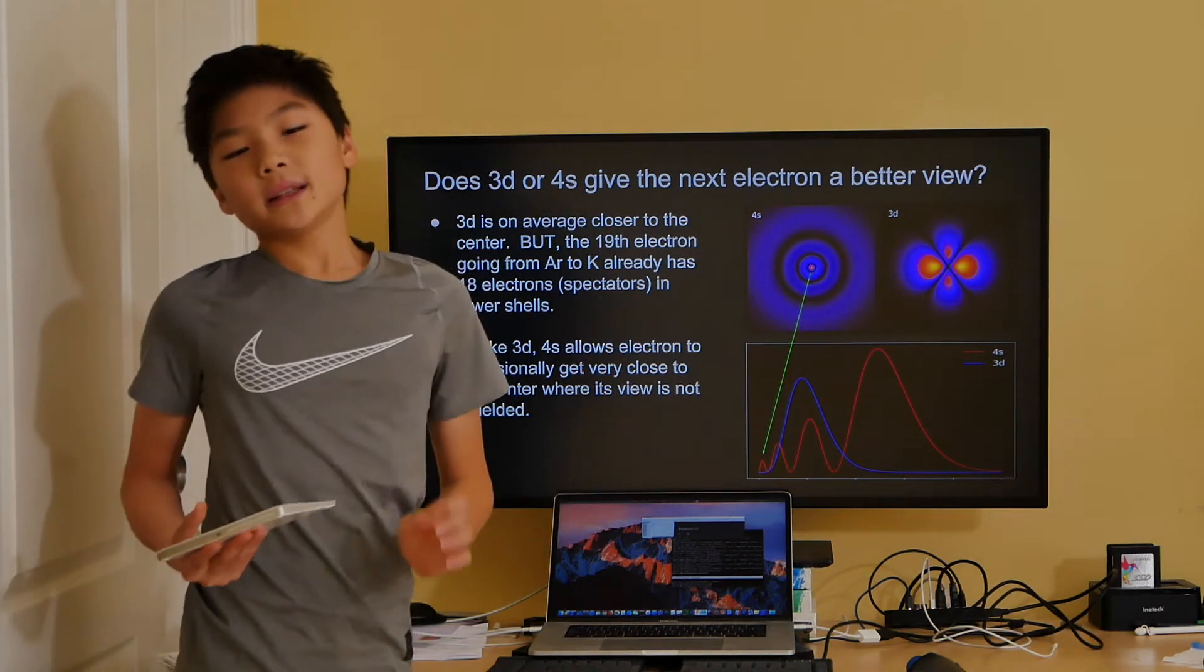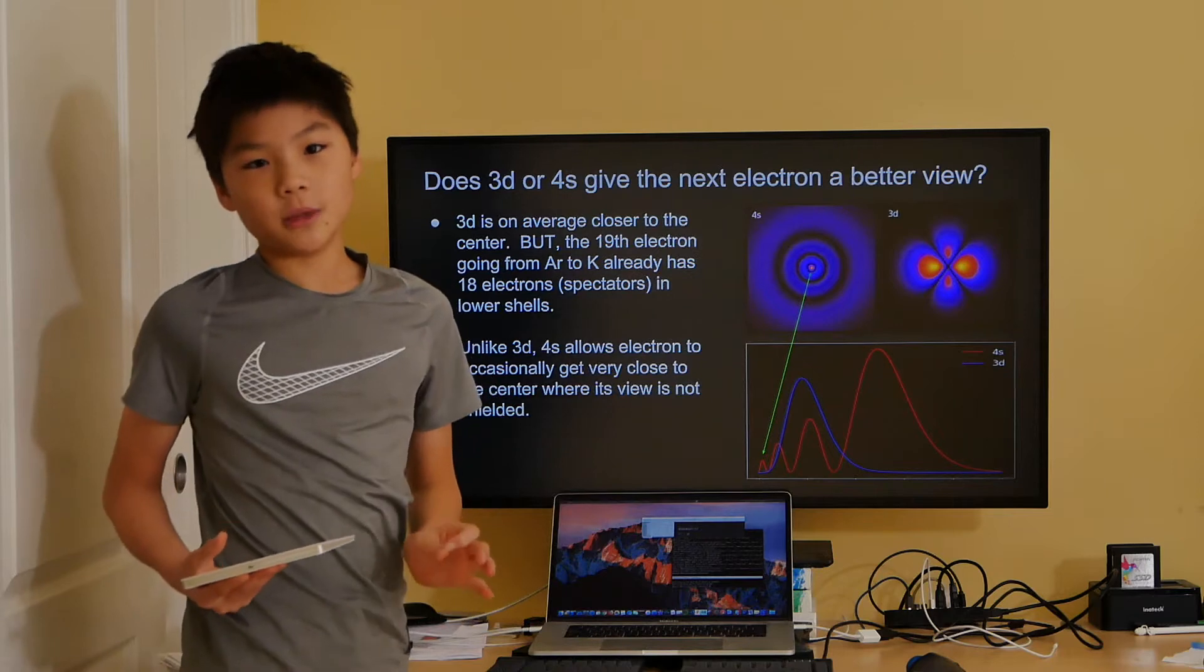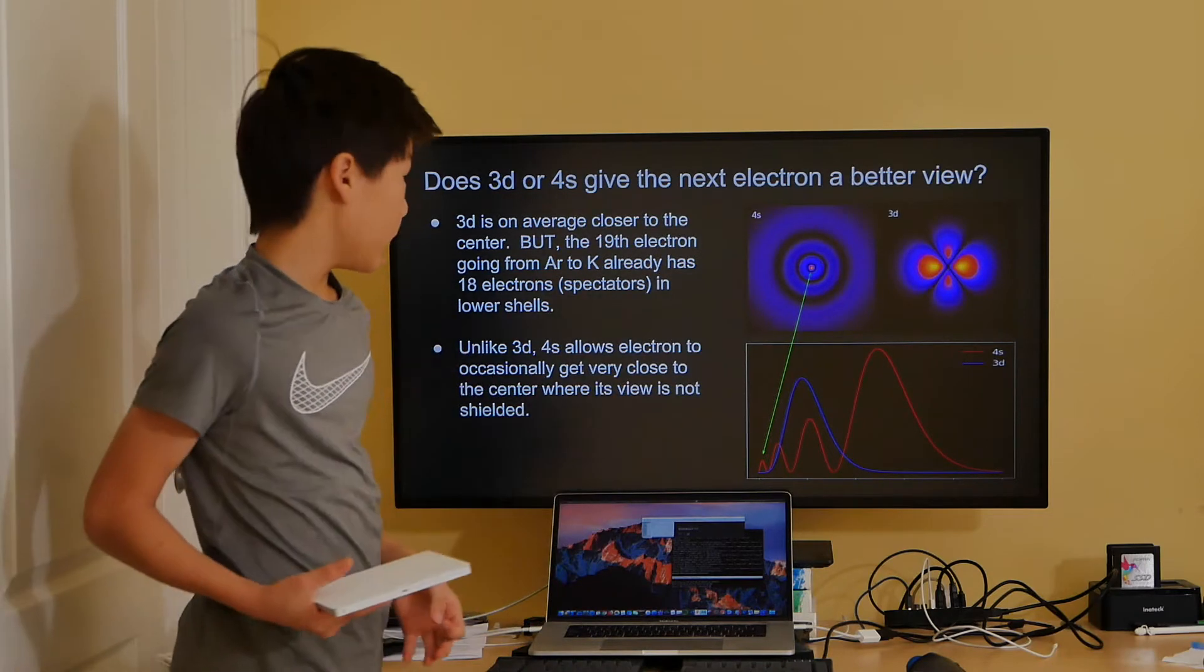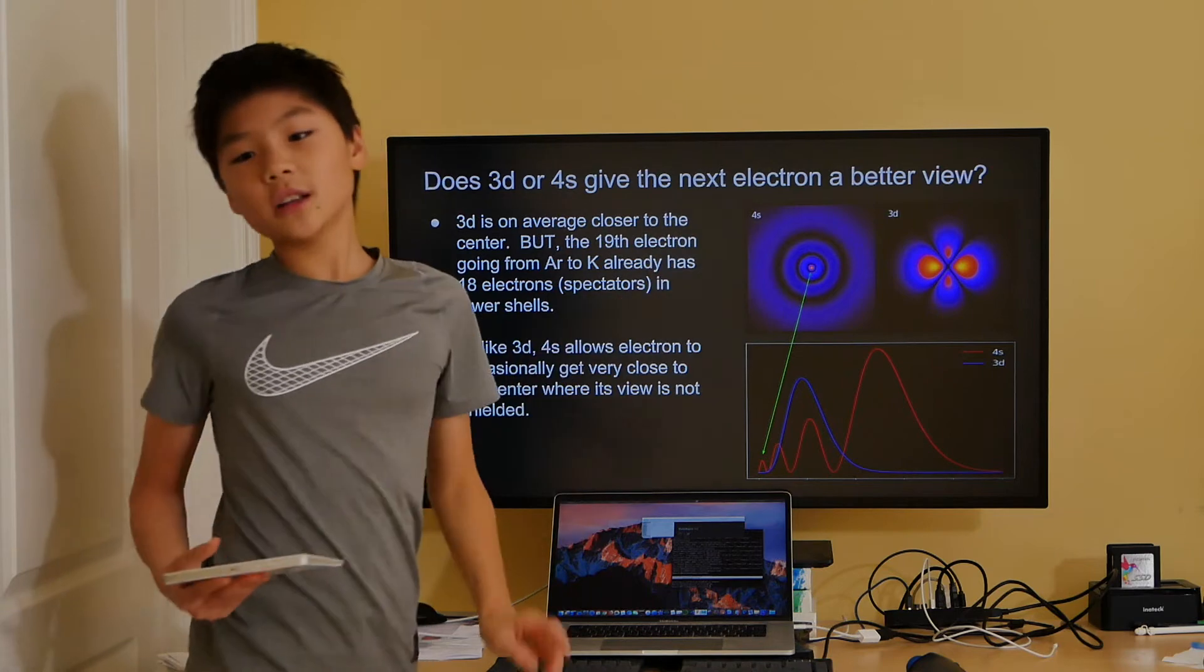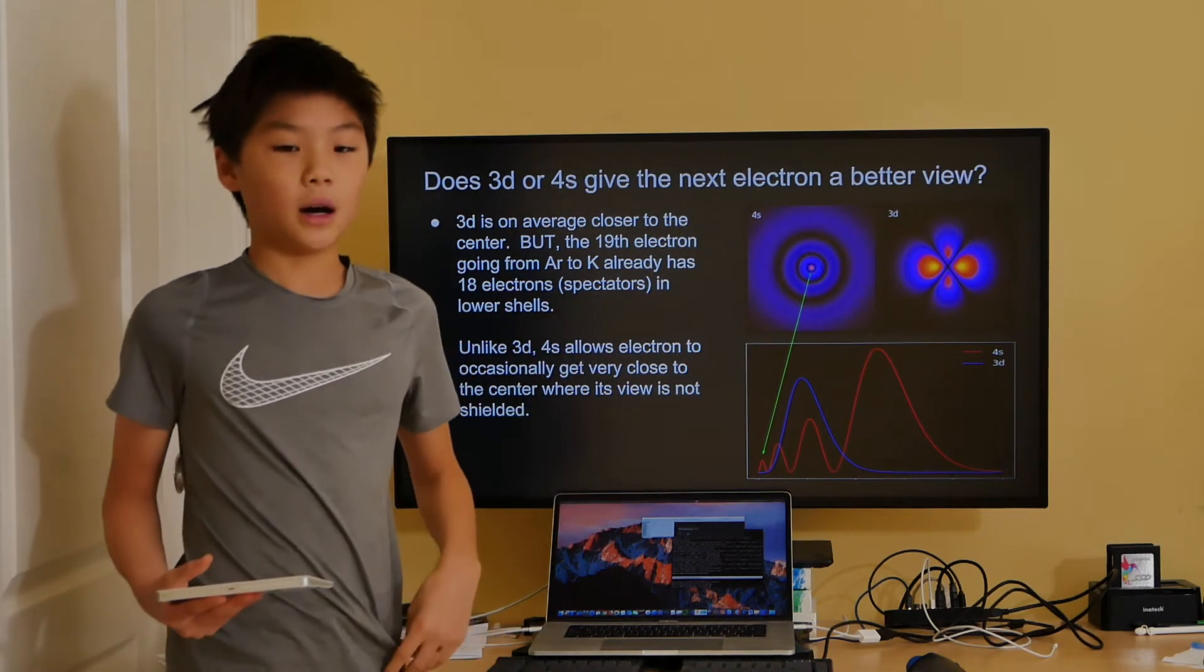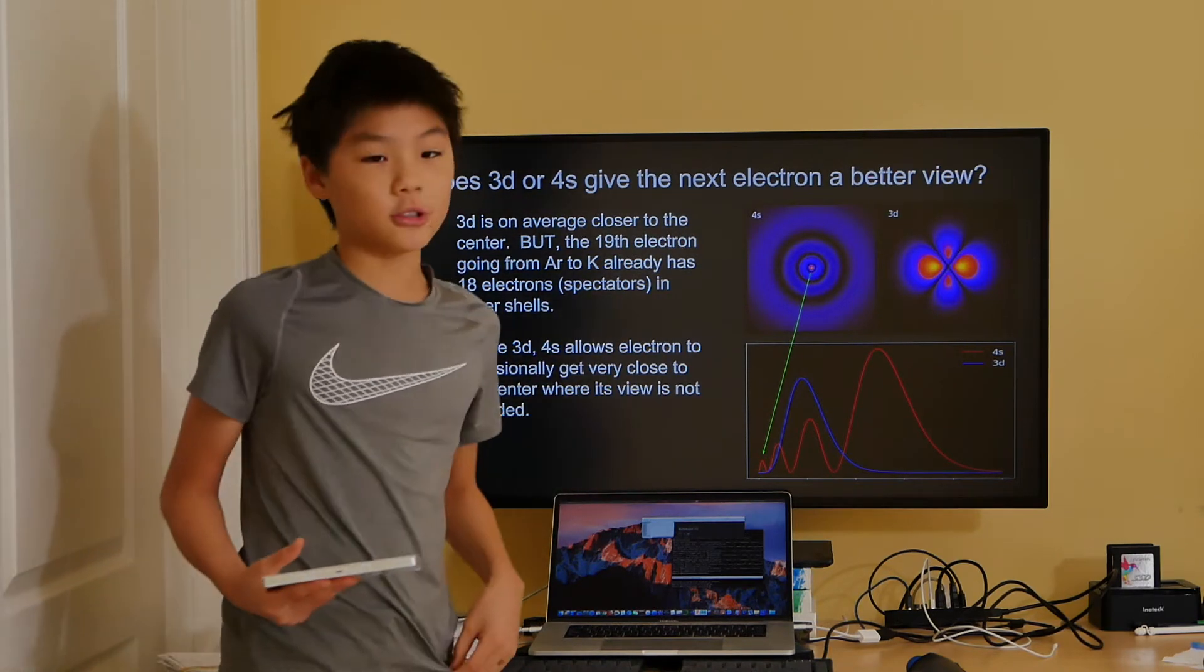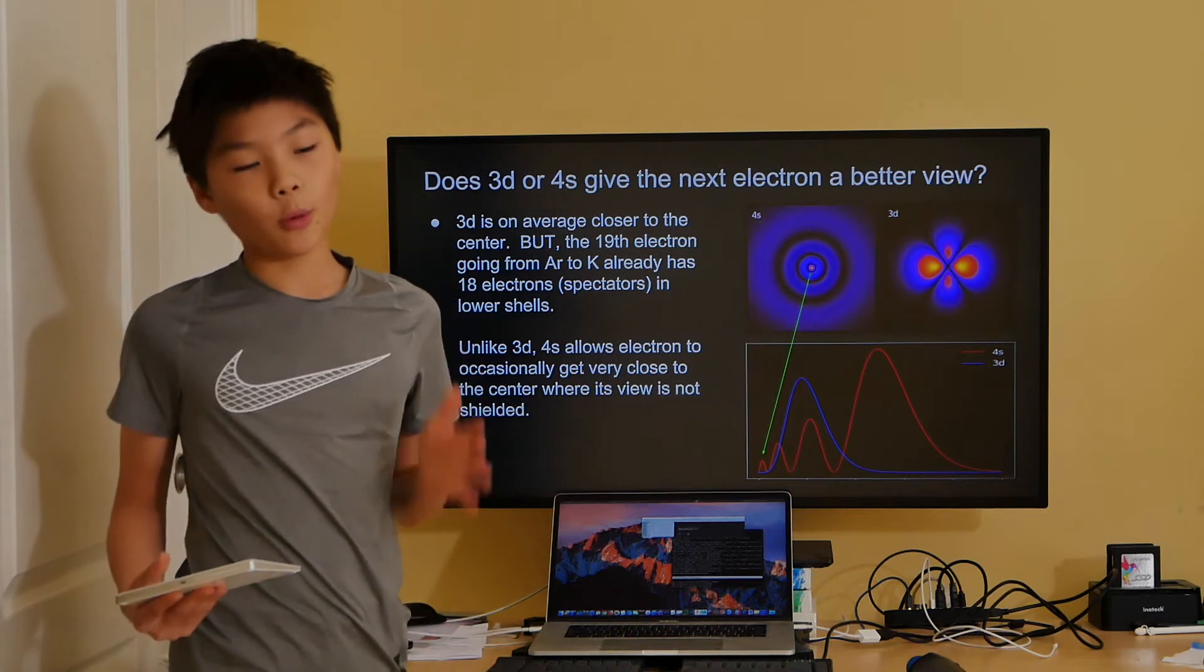So, the 19th and 20th electrons of potassium and calcium go to the 4s orbital. It's not until the 4s orbital is filled does the 3d orbital resume filling.